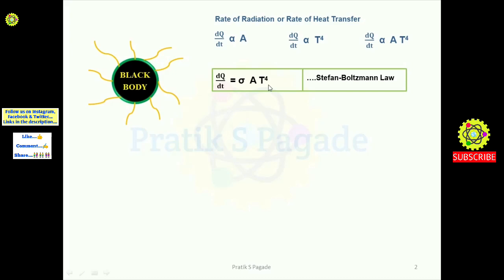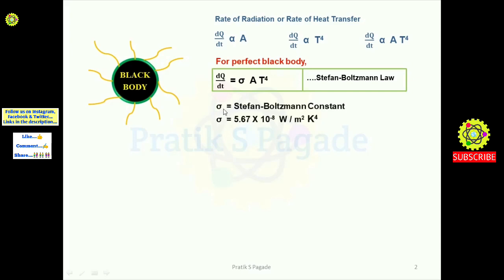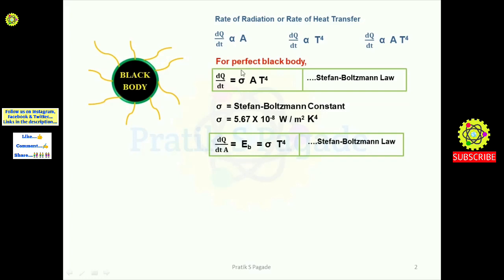This is called the Stefan-Boltzmann law, and it is only applicable for a perfect black body. Here sigma is the Stefan-Boltzmann constant, and its value is 5.67 × 10⁻⁸ watts per meter squared per kelvin to the power 4. We can further simplify this equation by moving area to the left-hand side denominator.